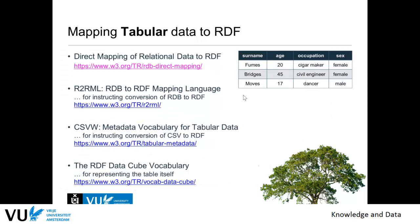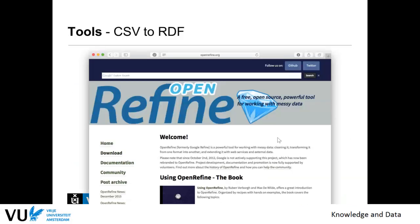There are also tools you can use. There is a mapping language R2RML — RDB to RDF mapping language — which gives you conversions from relational databases to RDF. There is a metadata vocabulary for tabular data that instructs you how to convert CSV files. There is also a vocabulary to describe tables themselves, the Data Cube Vocabulary, but that's probably out of scope. If you want to transform CSV data, it's really useful to look at the tabular metadata description to transform those CSV files into RDF.